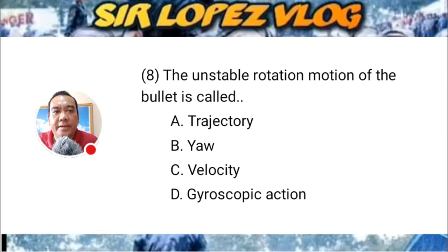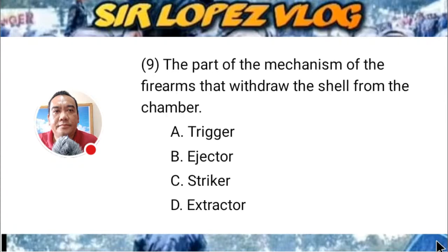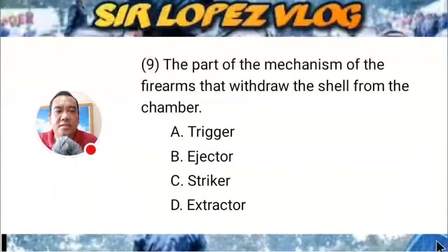Question number nine: The part of the mechanism of a firearm that withdraws the shell from the chamber. A) trigger, B) ejector, C) striker, or D) extractor?